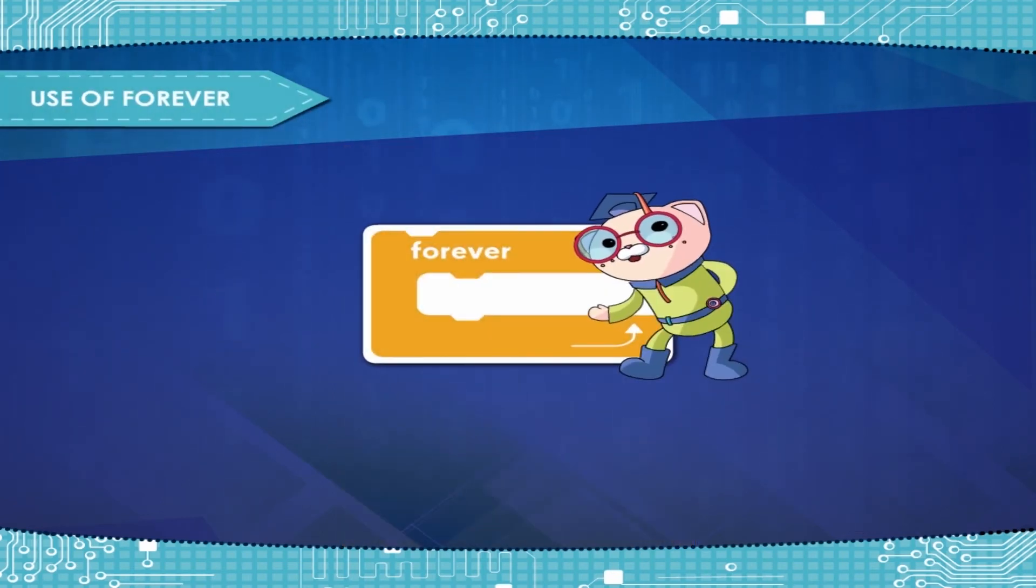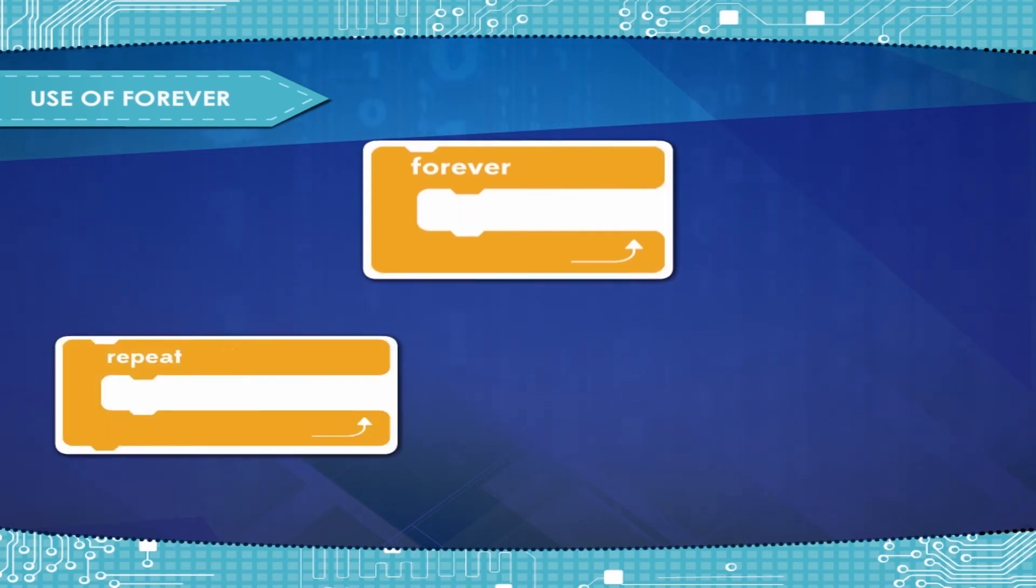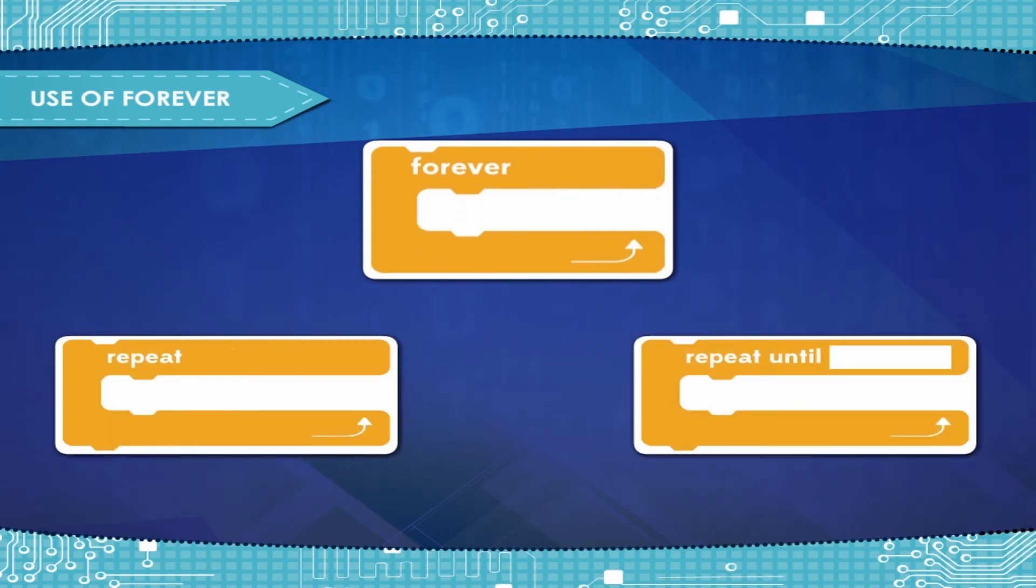The forever block is a control block and a C block. Blocks held inside this block will be in a loop, just like the repeat block and the repeat until block, except that the loop never ends.